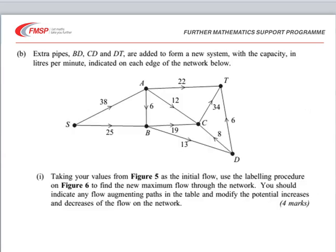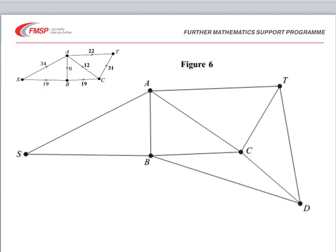The next part of the question introduces an extra pipe going to point D with the capacities shown. We're asked to use our values from figure 5 as an initial flow on the new network diagram figure 6. That's the flow we had previously, and we've just got to represent that on our new diagram to use the labelling procedure.